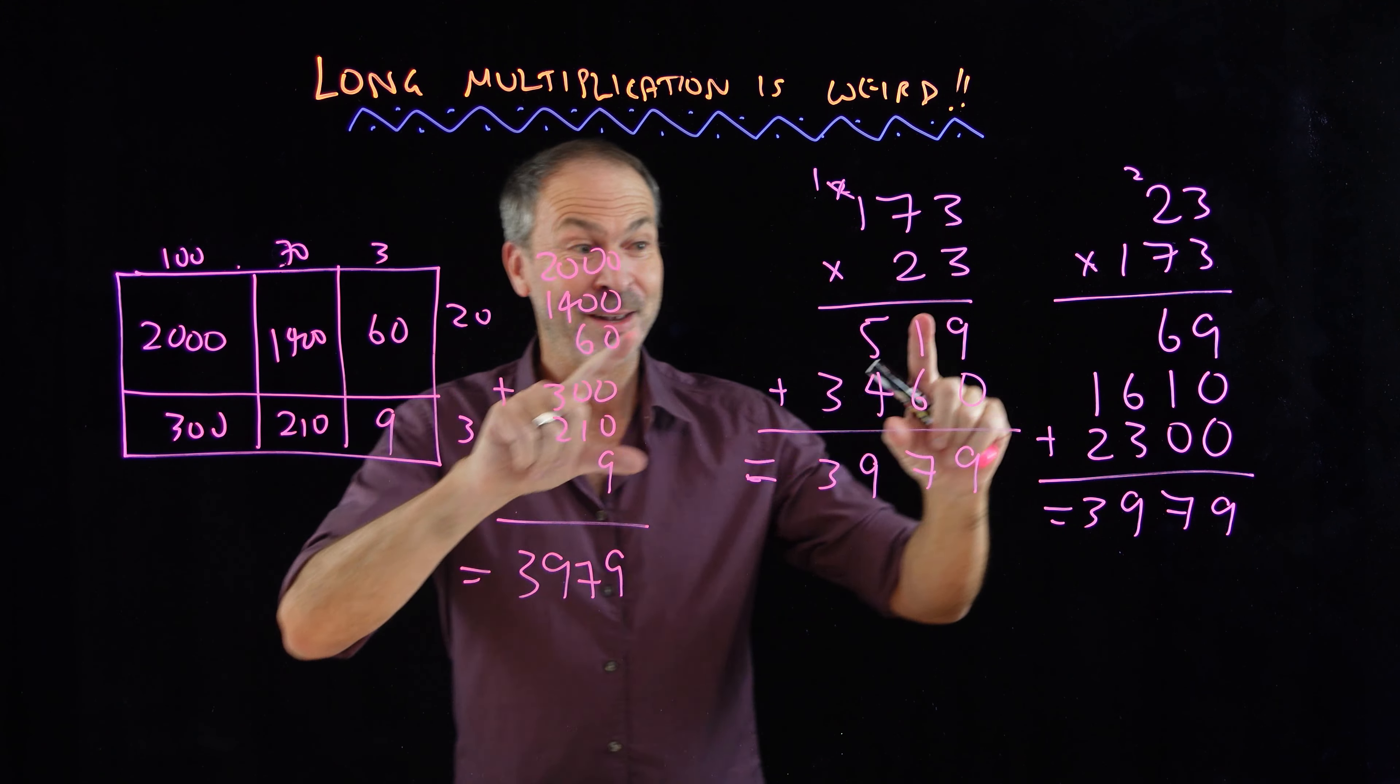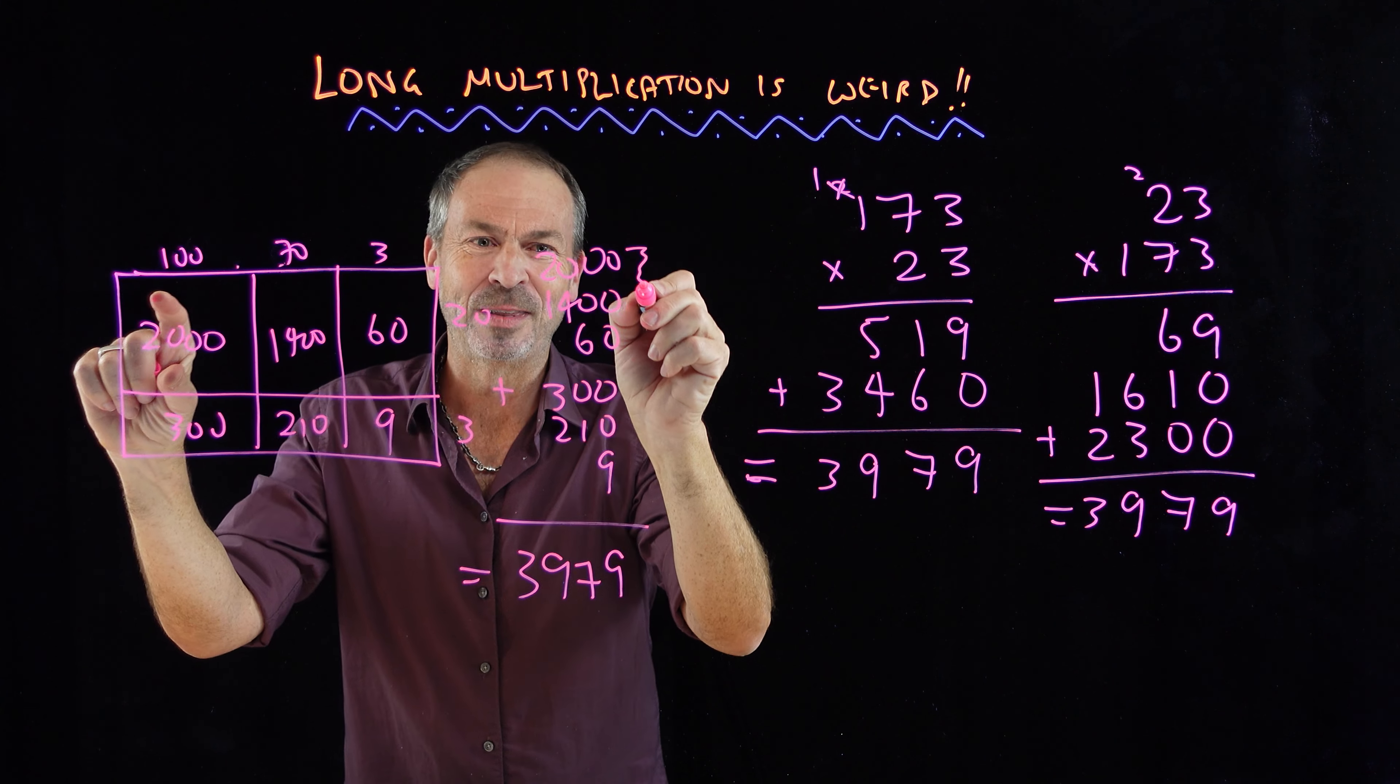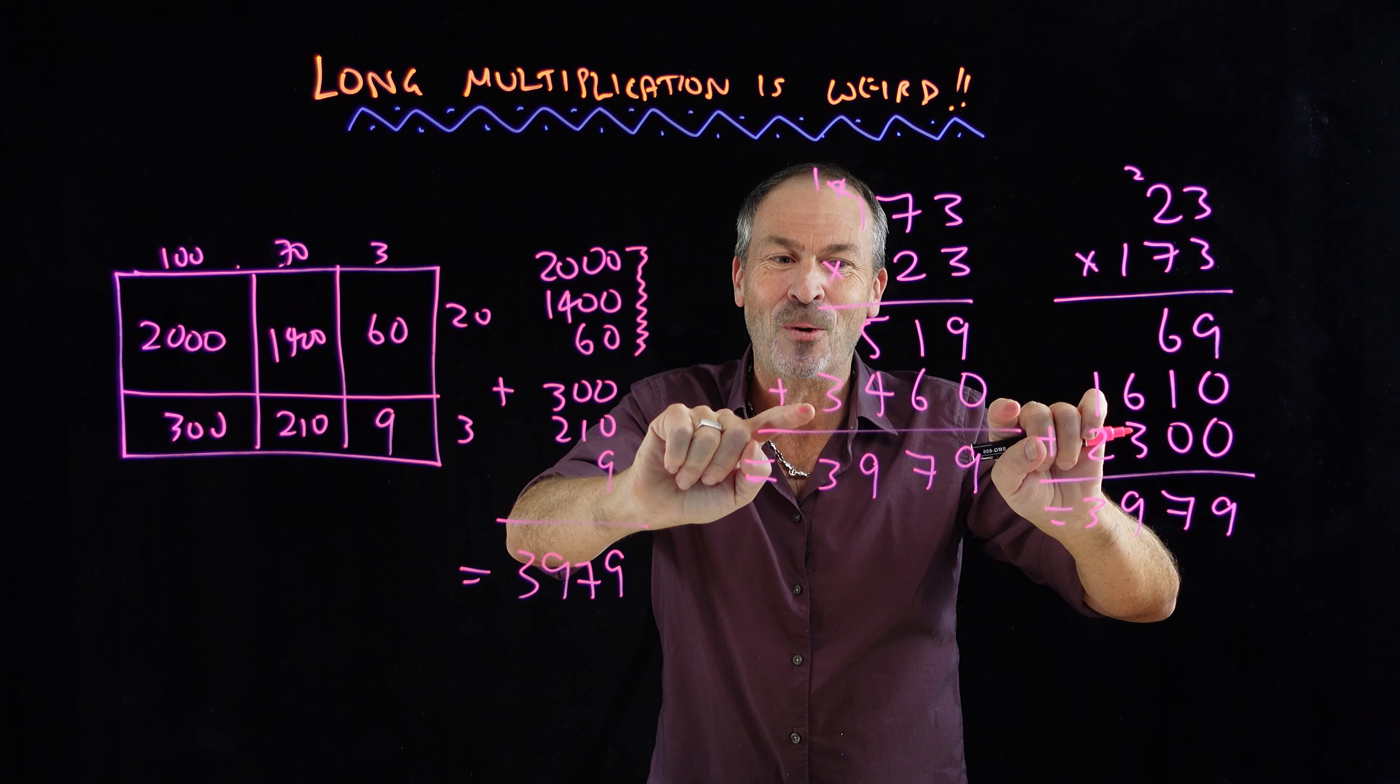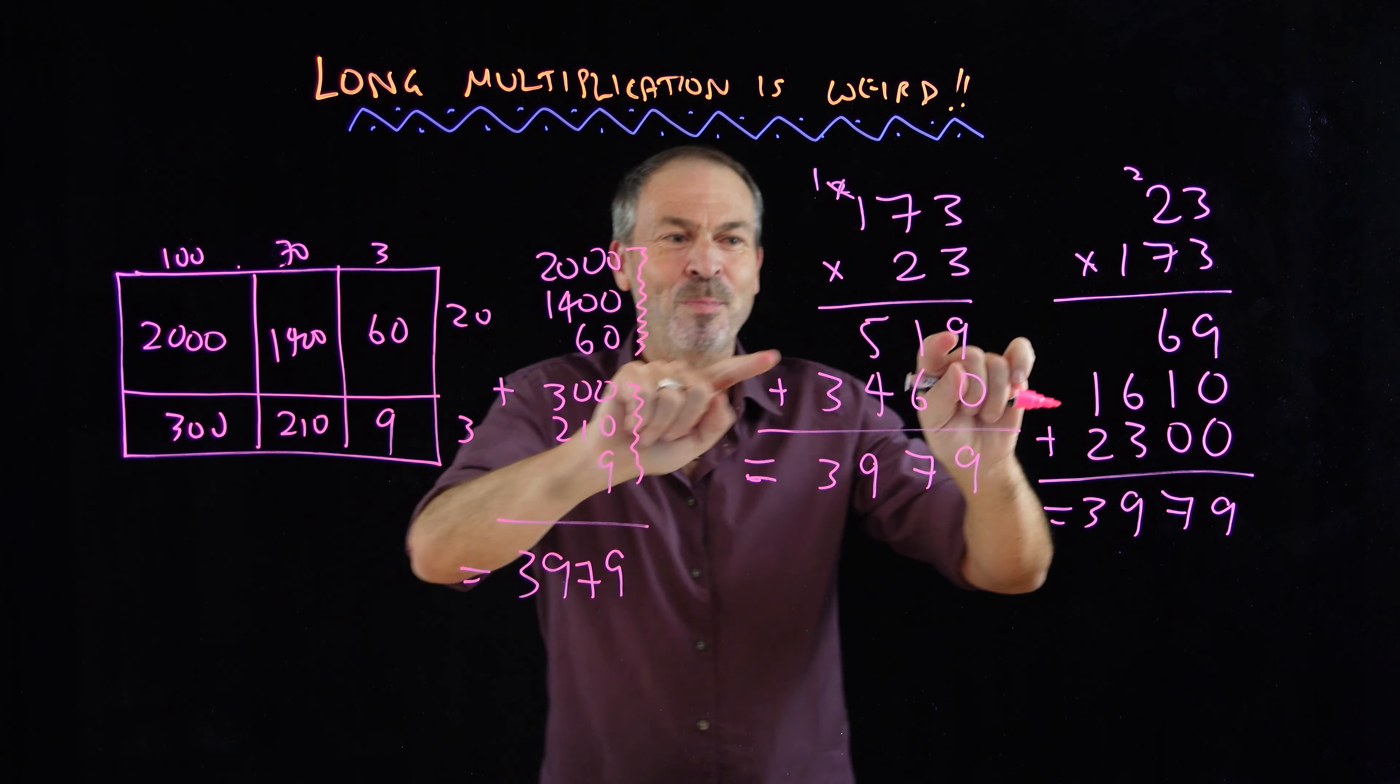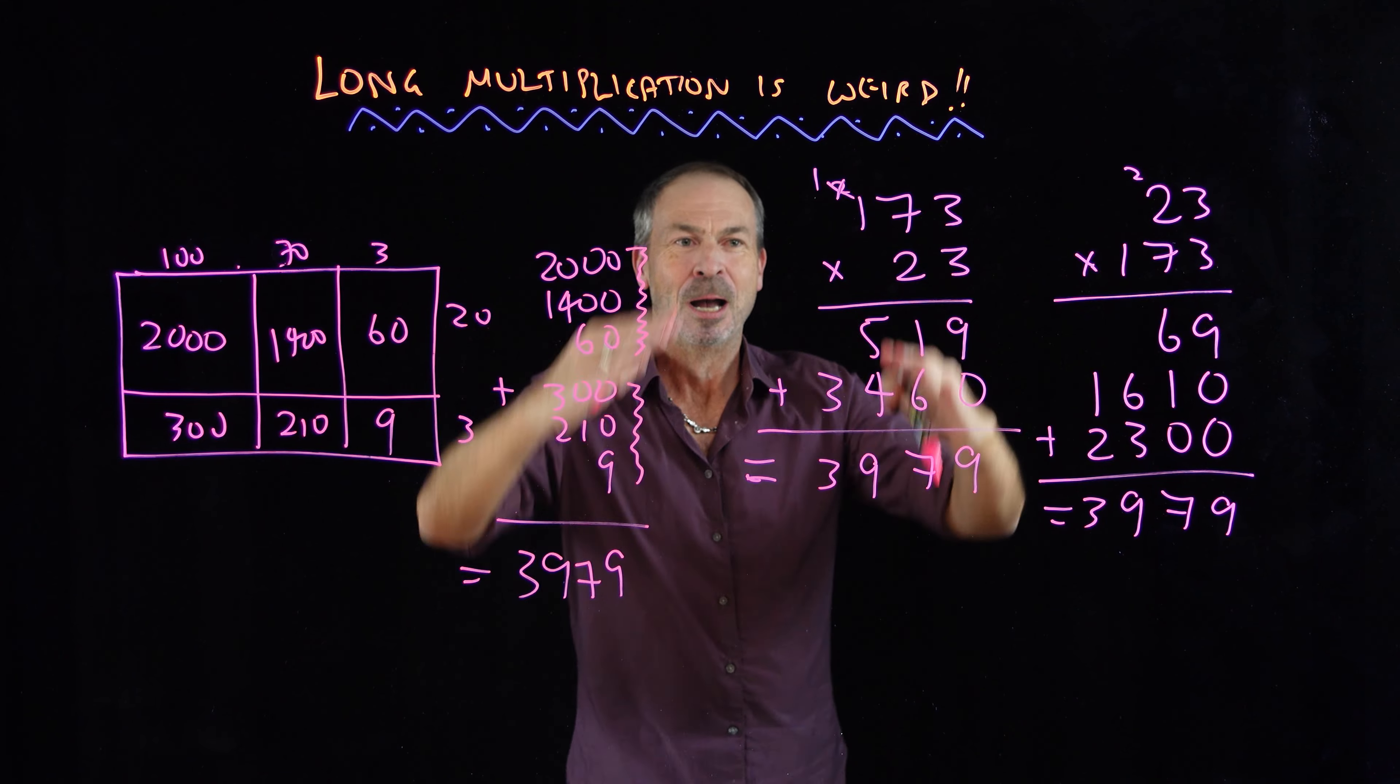So where's this 519? Where's this 3,460? Well, look at these three pieces: the 2,000, the 1,400, and 60. If I combine them into one number, that would be 3,460. And if I look at these pieces here, the 300, the 210, and the 9, if I squish those together, there's the 519. This 519 is really these three pieces of the rectangle. This 3,460 is really those three pieces of the rectangle.